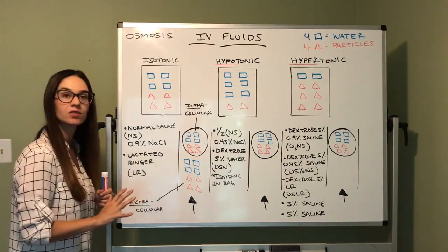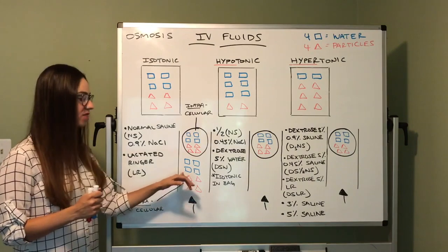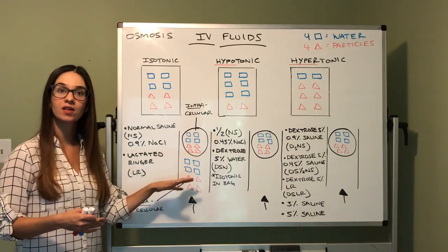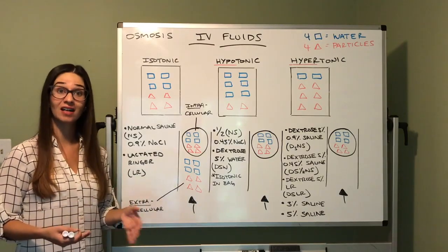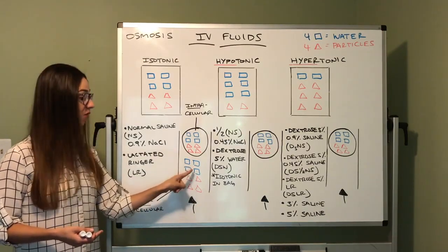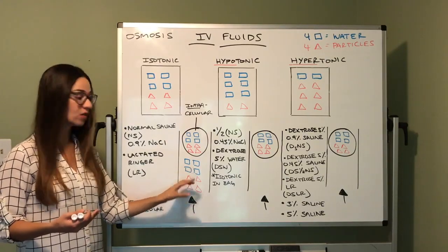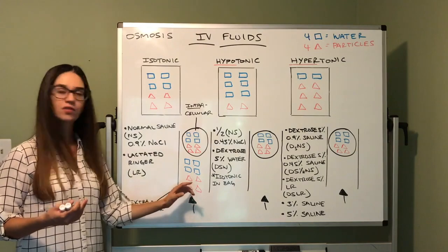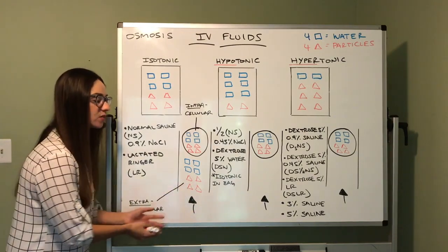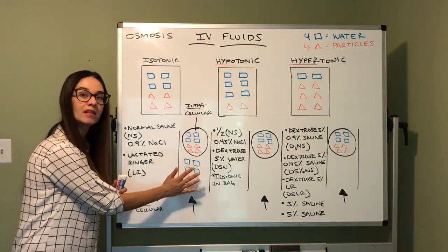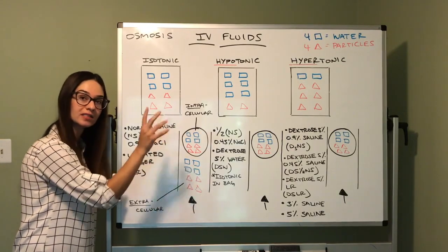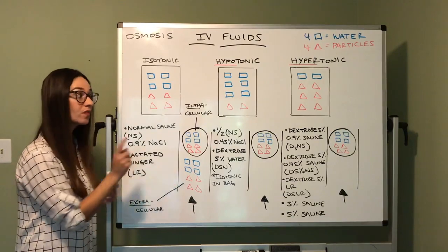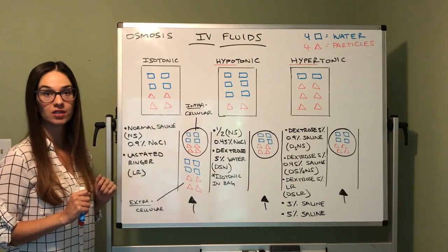We use isotonic solutions for so many things. Think of a client who is hemorrhaging — they are losing a lot of fluid from their extracellular space. A dehydrated client also lost a lot of water from their extracellular space, so their particles become highly concentrated; a dehydrated client can have a lot of sodium. When we give isotonic solutions, the fluid will stay right in the vessel we administer it in — it will stay in our extracellular space.